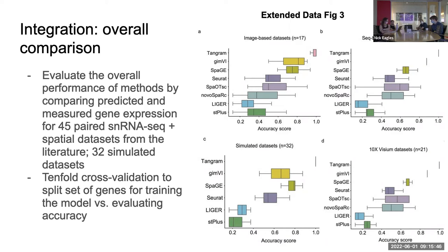These are only part of the figure — they divided results into other classifications of datasets, but these are the relevant ones for us. To validate method performance, they used 10-fold cross-validation: splitting the set of genes so that methods train on a certain set of genes, and then you evaluate accuracy on genes the model wasn't trained on.